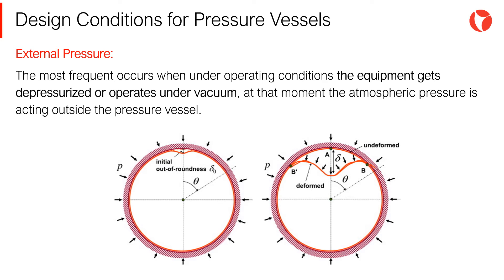A vessel must be under external pressure for many reasons. The most frequent occurs when, under operating conditions, the equipment gets depressurized or operates under vacuum. At that moment, the atmospheric pressure is acting outside the pressure vessel.